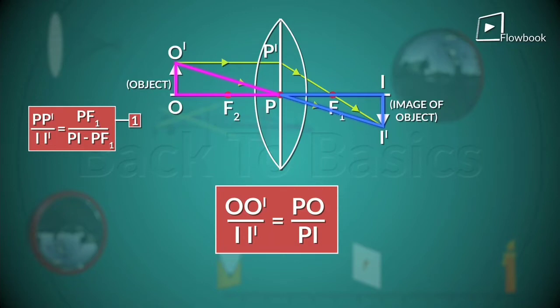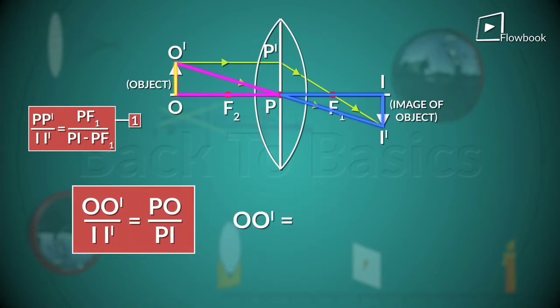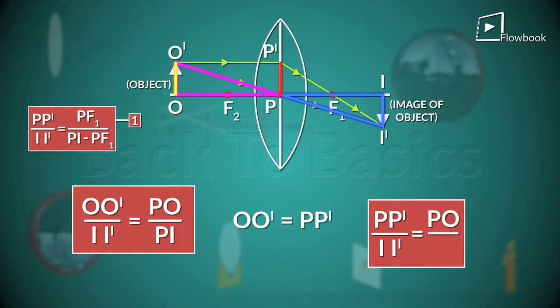But, as you can see, O O' is equal to PP'. Therefore, this is nothing but PP' by I'I' is equal to PO by PI.